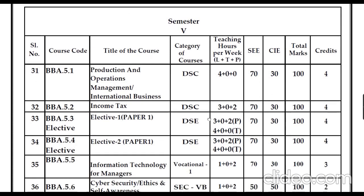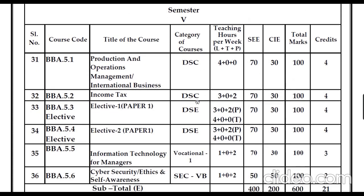In the fifth semester you will have two discipline core subjects: Production and Operation Management or International Business, and Income Tax. Then come the discipline-specific elective papers. Elective means specialization — based on your specialization, whether Marketing, Human Resource, Finance, IT, or Supply Chain Management, you can choose the corresponding elective.